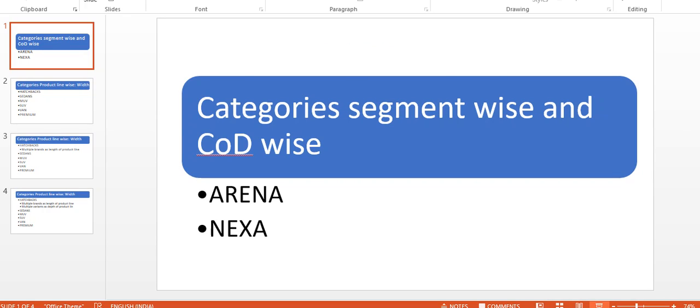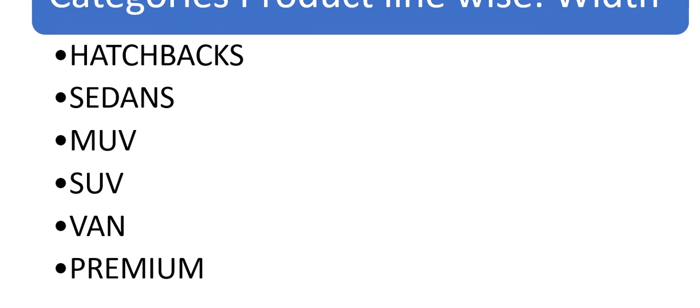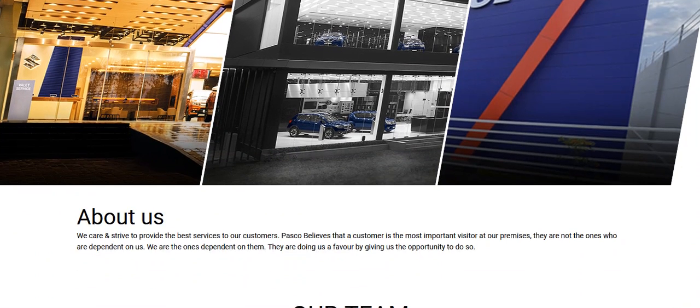Looking at the categories segment-wise or channel-of-distribution-wise, there are two categories: Arena and Nexa. If you look at the categories of the product line called cars for Maruti in the automobile industry, you will find multiple categories representing the width under the product line. For both Arena and Nexa segments, you can see a width of six different categories: hatchbacks, sedans, multi-utility vehicles, sports utility vehicles, vans, and a premium category specifically for Nexa showrooms.